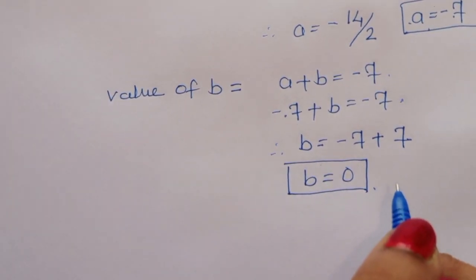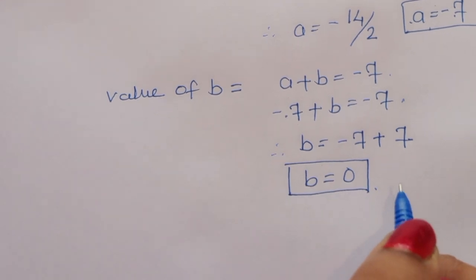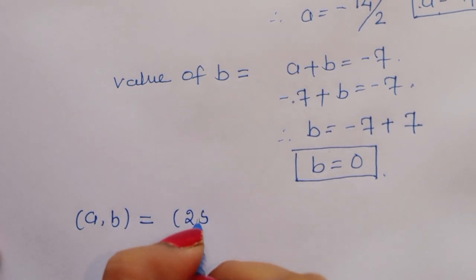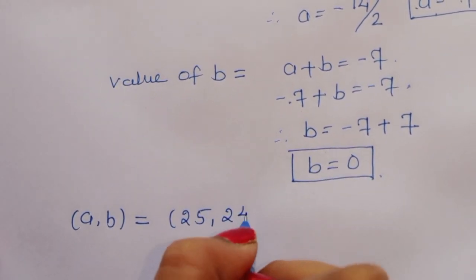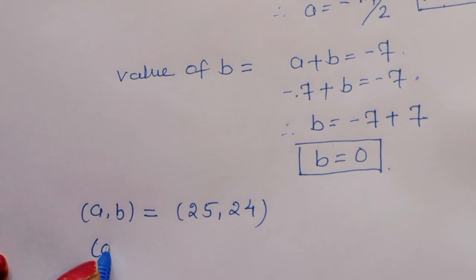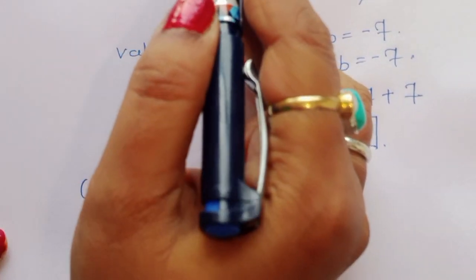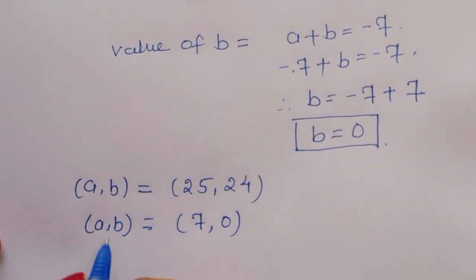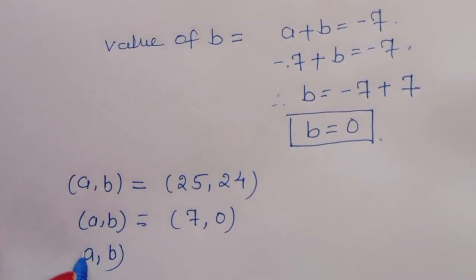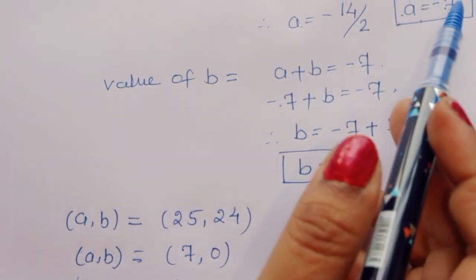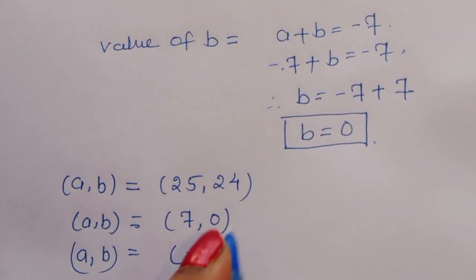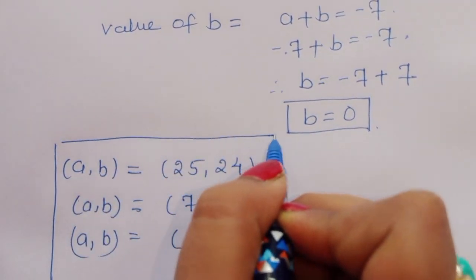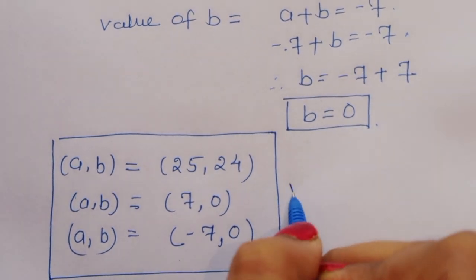In summary, we have three valid cases. Case 1: a equals 25 and b equals 24. Case 2: a equals 7 and b equals 0. Case 3: a equals minus 7 and b equals 0. These are all the values of a and b. This is the complete solution.